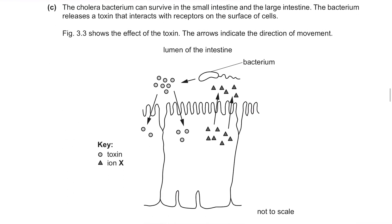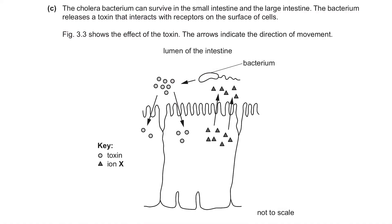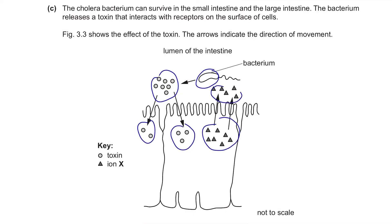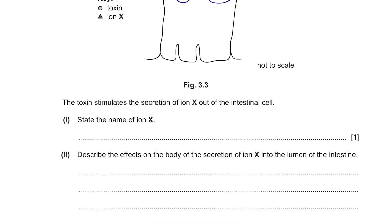The cholera bacterium can survive in the small and large intestine. The bacterium releases a toxin that interacts with receptors on the surface of cells. Figure 3.3 shows the effect of the toxin — when bacteria approach the cell, toxin molecules enter the cell and ion X is released from the cell. The toxin stimulates the secretion of ion X out of the intestinal cell. The answer is chloride ions — cholera causes an increase in loss of water and chloride ions.